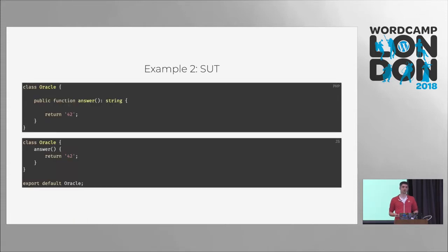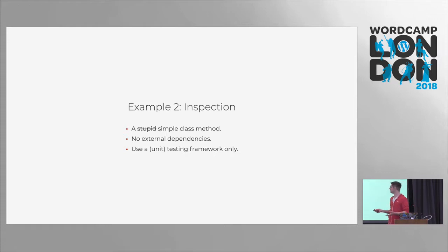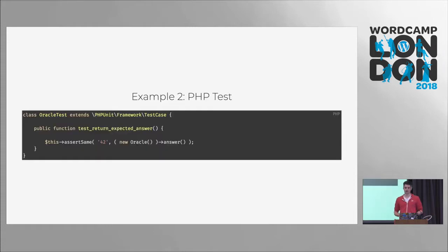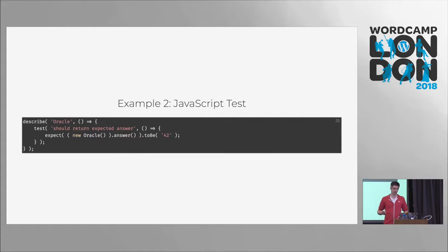What happens if we do object-oriented programming? We have the function from before, but we encapsulate that in a module or a class. What's new is we still have that simple piece of code living in some module. We still don't have any dependencies, which means we're still good with just a testing framework. We create on the fly an object and directly call that method, and we want to make sure that these two things fit together. This is the JavaScript version.